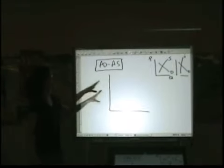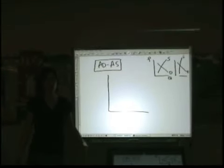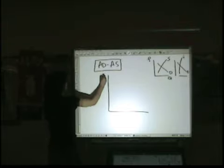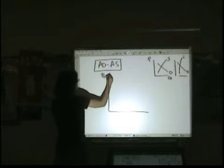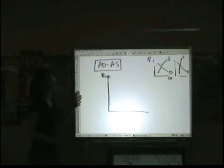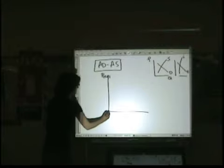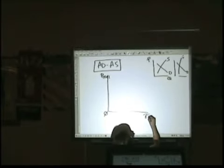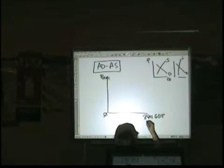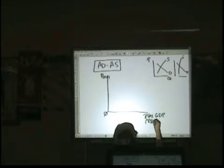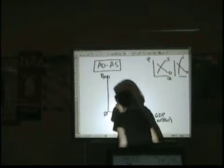So instead of just P and Q, because that's like the small scale, what you want to make sure you do with AD-AS is price level, which implies a level of inflation. So don't just say price anymore, it's price level. And on the bottom, it's not just quantity, it's real GDP. Real GDP or real output. You can do either one, they mean the same thing.